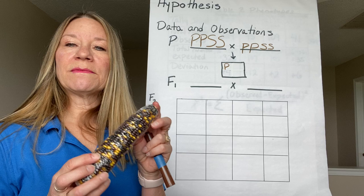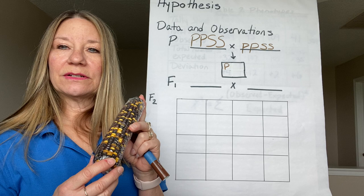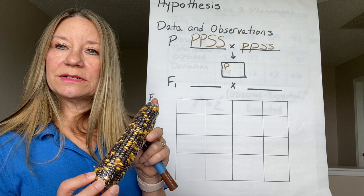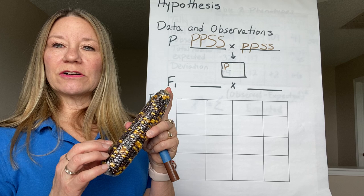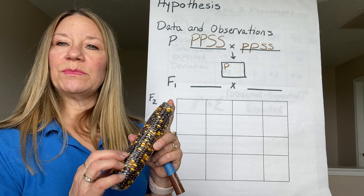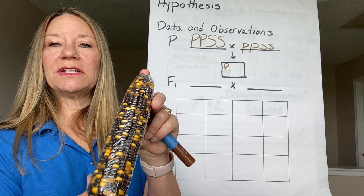So what I have is an ear of corn. In corn, purple is dominant over yellow for kernels, and smooth is dominant over wrinkled. Some of these will appear smooth and some will appear wrinkled due to the amount of starch. If they are smooth, it means they have a lot of starch. If they are wrinkled, it means they have a lot of sugar stored in them.